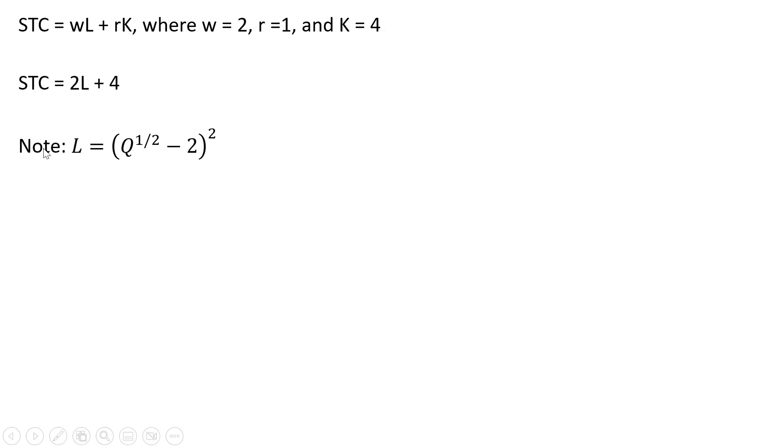The next step is we're going to take that result from the first slide. Where we have L here, we're going to replace that with this term here. So making that substitution, we now have our short run total cost. Here's our short run total cost equation when Q is greater than 4. If Q is less than or equal to 4, short run total cost will simply equal 4 or $4.